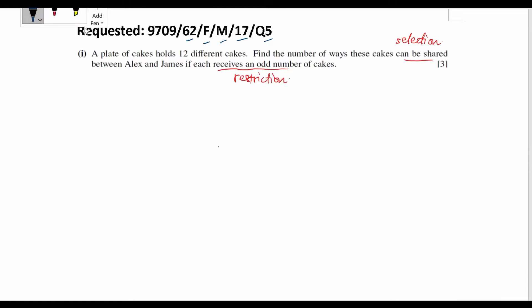So in order to consider the number of ways, we focus on Alex. So there are 12 different cakes. Then we simply choose 1 out of 12 cakes and give it to Alex. Then the remaining 11 of the cakes will be given to James. So this will be the number of ways given by 12C1. Or we have 12C3.